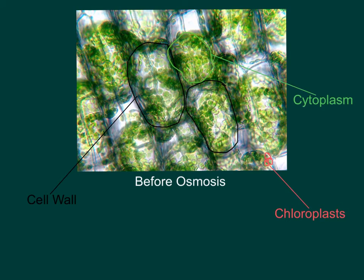As we can see here, we have a photo of multiple Elodia cells. Here, circled in black, are the cell walls. In the green circles, we can see cytoplasm, and in the red circles, there are chloroplasts.